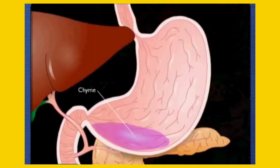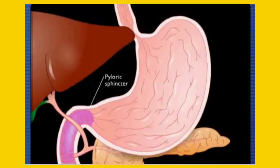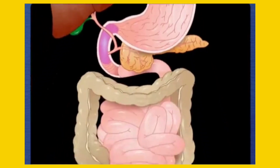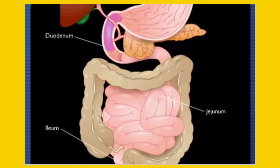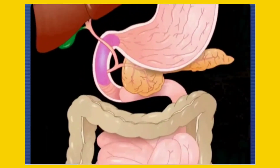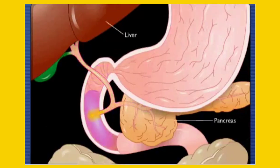Muscular contractions in the stomach further break down the bolus and mix it with stomach secretions to form a thick liquid called chyme. Chyme exits the stomach through the pyloric sphincter and enters the small intestine, the major site of nutrient absorption. The small intestine consists of three parts: the duodenum, jejunum, and ileum.